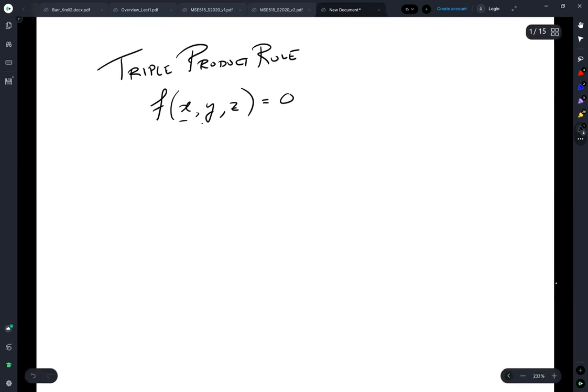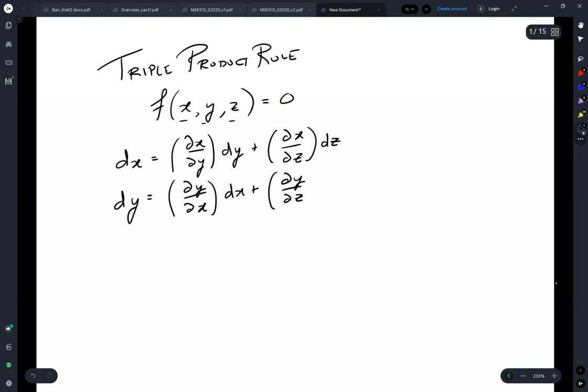Now, each of these variables we can write out as a total differential, but we're only going to need two of them. So we'll write the differential in terms of x plus dy by dz dz.